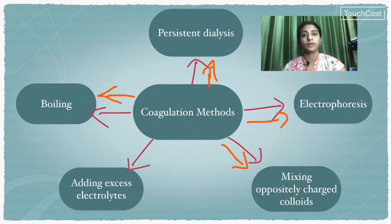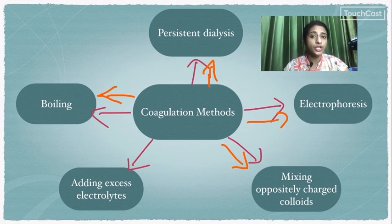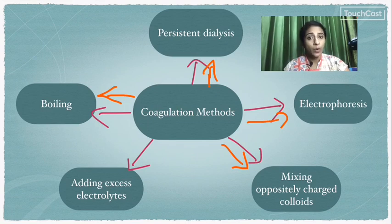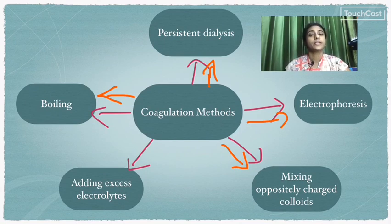The next method is boiling. If we take a colloidal solution and boil it, the dispersion medium evaporates. As the amount of dispersion medium decreases, the dispersed phase is disturbed and precipitates. Therefore, boiling is another method to cause precipitation or coagulation.